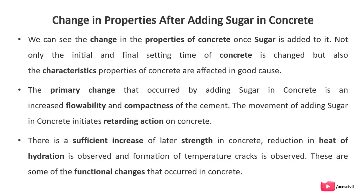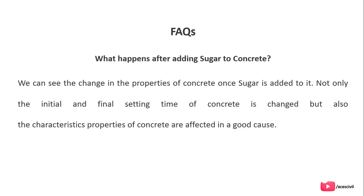Looking at changes in properties after adding sugar, we can see that once sugar is added, not only are the initial and final setting times of concrete changed, but also the characteristic properties of concrete are affected positively. The primary change that occurs by adding sugar to concrete is increased flowability and compactness of the cement. The addition of sugar in concrete initiates a retarding action; there is a sufficient increase in later strength, a reduction in heat of hydration is observed, and formation of temperature cracks is also observed.